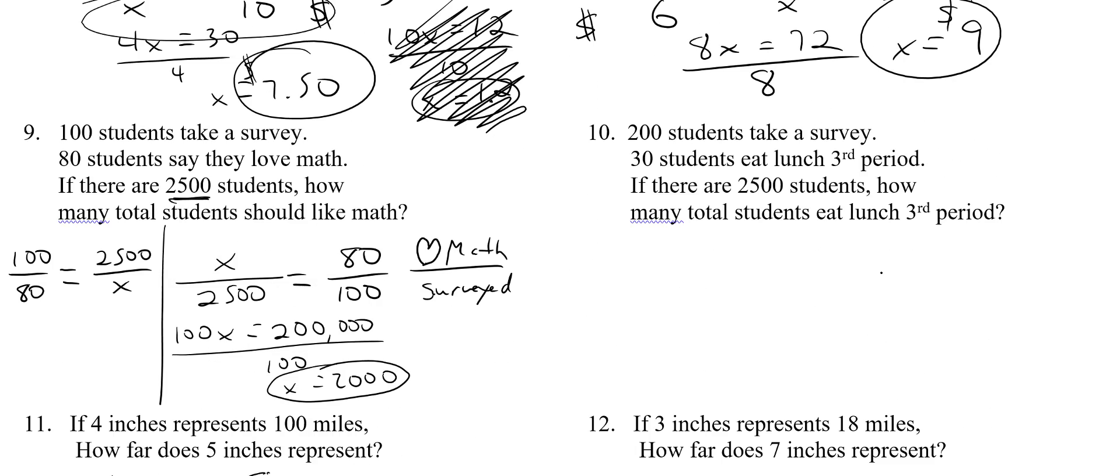Number 10, 200 students take a survey. 30 students eat lunch third period. So that means out of 200, 30 eat lunch third period. So eat third out of 200. And now I'm going to say, there are 2,500 students. So make sure you put that on the bottom because now I want to know how many students eat lunch out of 2,500. So cross multiply. So 200x equals 75,000 divided by 200. So x equals 375. That's how many students eat lunch third period.